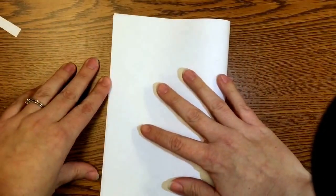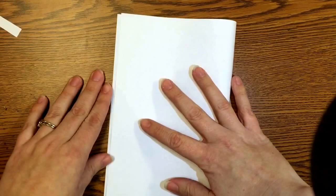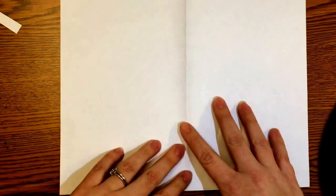You're going to start by taking your sheet of paper and folding it in half, hamburger style. Unfold it and flip your paper over.